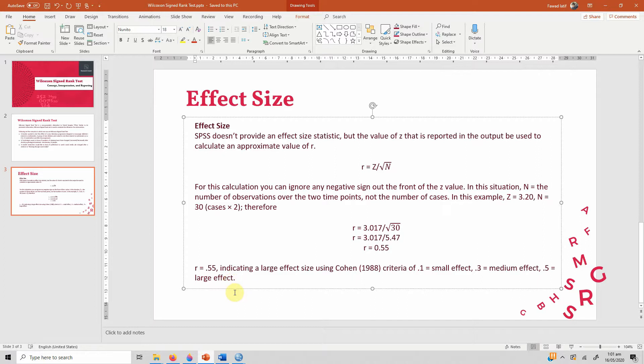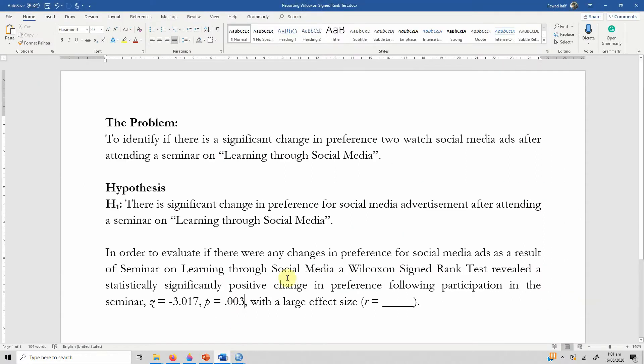We add 0.55 here. This is how one can use Wilcoxon signed rank test to evaluate whether or not there has been a change due to an intervention.